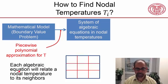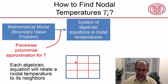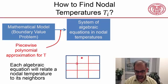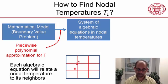Each algebraic equation will relate a nodal temperature to its neighbors. For instance, if I consider this particular node, when the solver derives the algebraic equation for that node, it will relate the nodal temperature — let's say if this is node 3 — it will relate T3 to the neighboring temperature values.